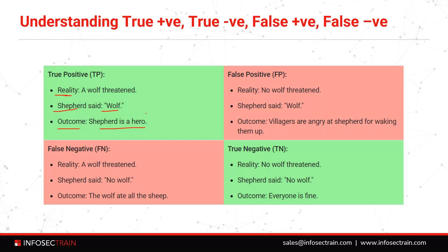He told the villagers there is a wolf, and as a result the actions were taken by the villagers to put that wolf away from the village. Then we have false positive: in reality there was no wolf in the village, but still Shefford started shouting 'wolf, wolf.' He might have been hallucinating or doing mischief — he may have seen a dog but called it a wolf.